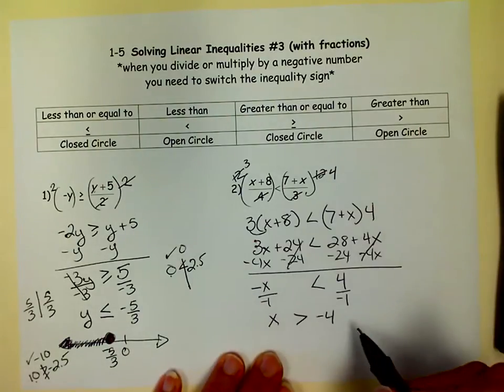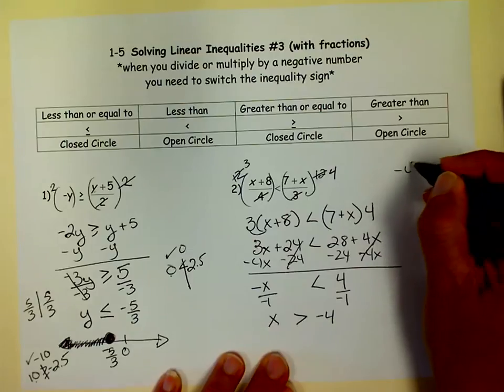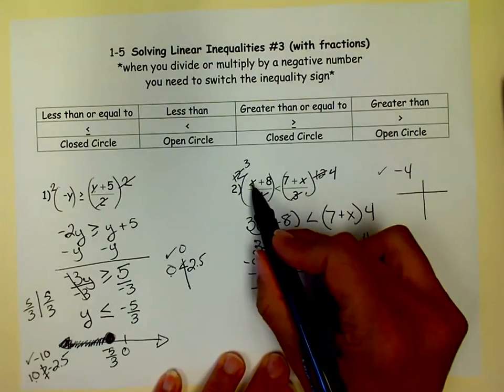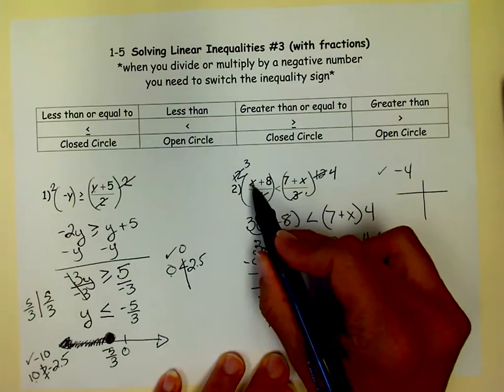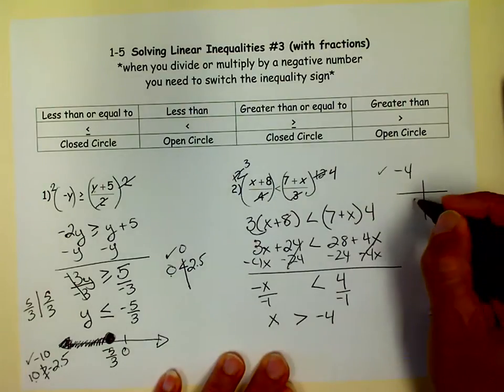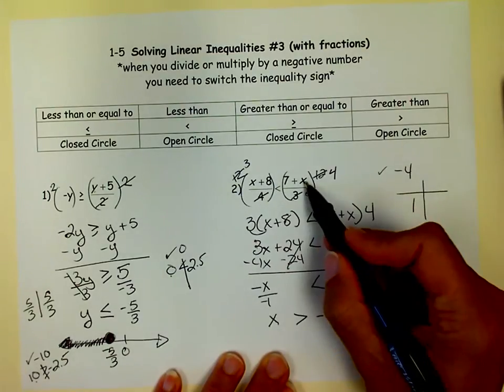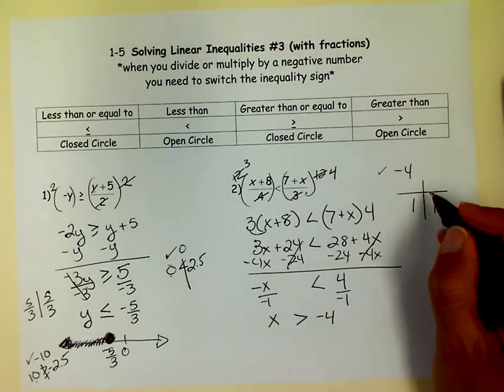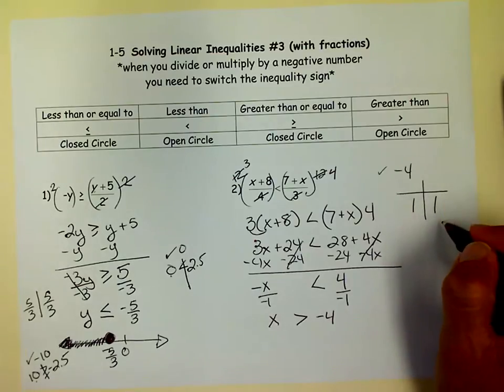Again, if I put a negative 4 in there, I should get the same thing on both sides. So let's check negative 4. When I put a negative 4 in there, I get 8 minus 4, which is 4, divided by 4, which is 1. If I put a negative 4 in there, I get 7 minus 4, which is 3, divided by 3, which is 1. So that's good. I checked my negative 4. And I got the same thing on both sides.